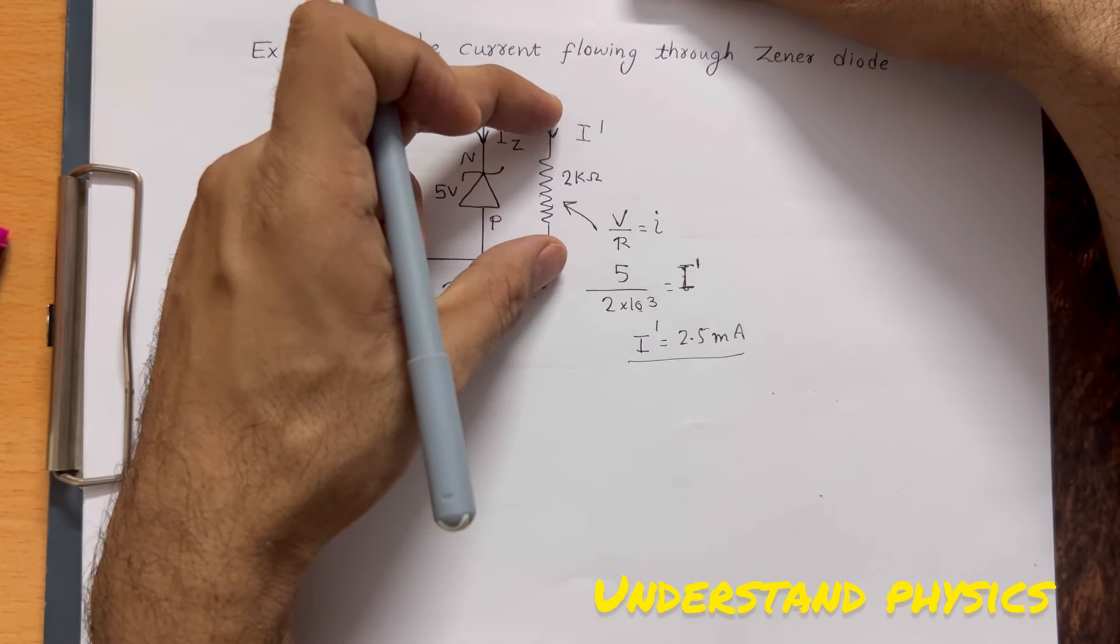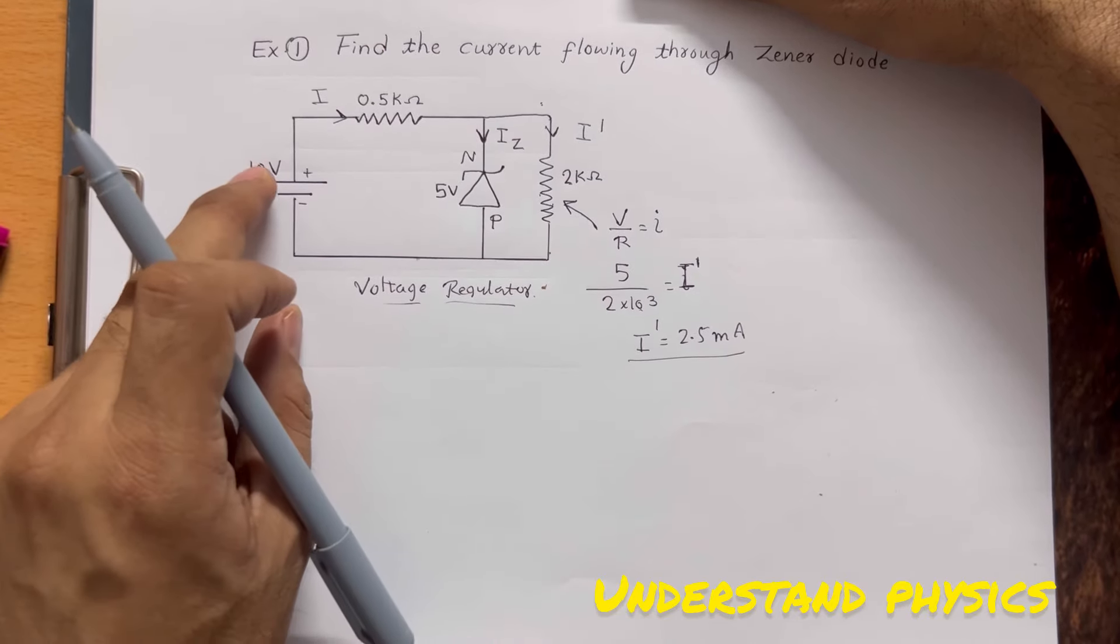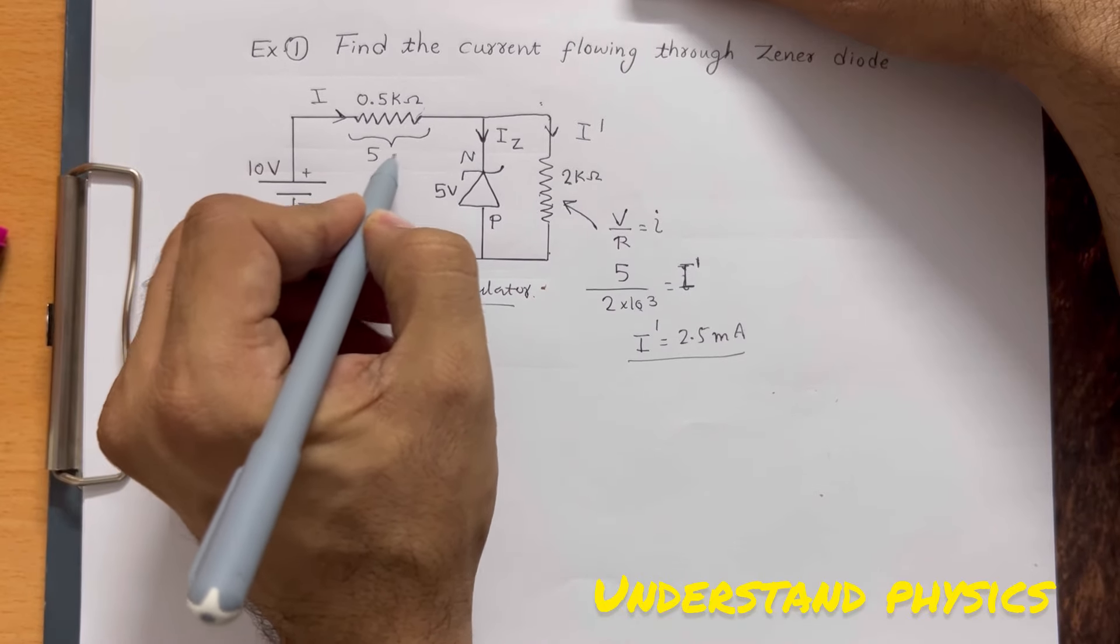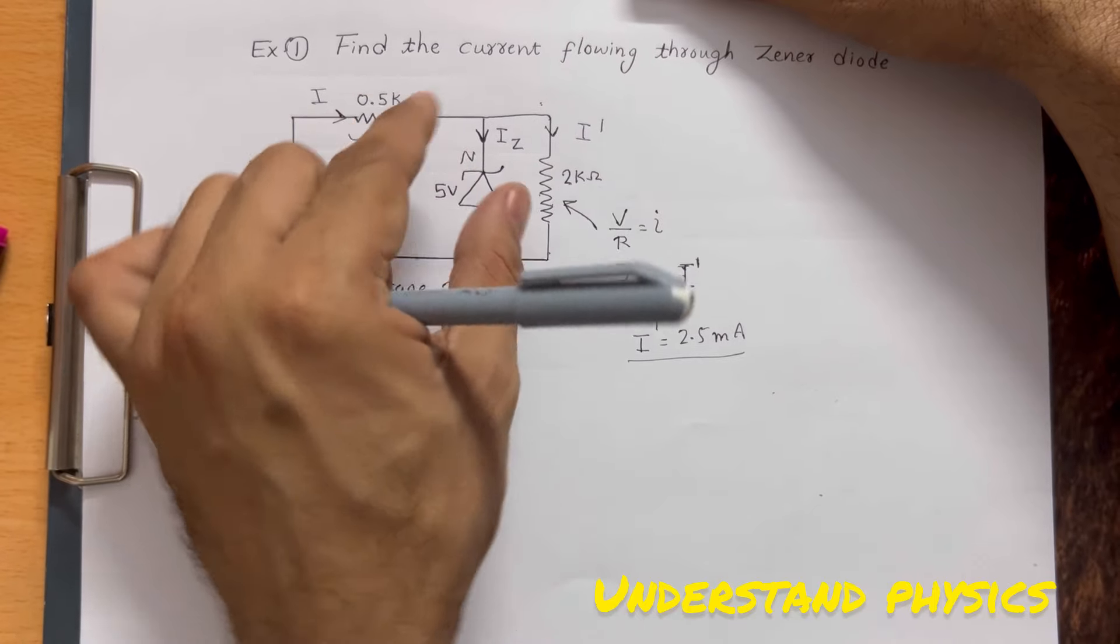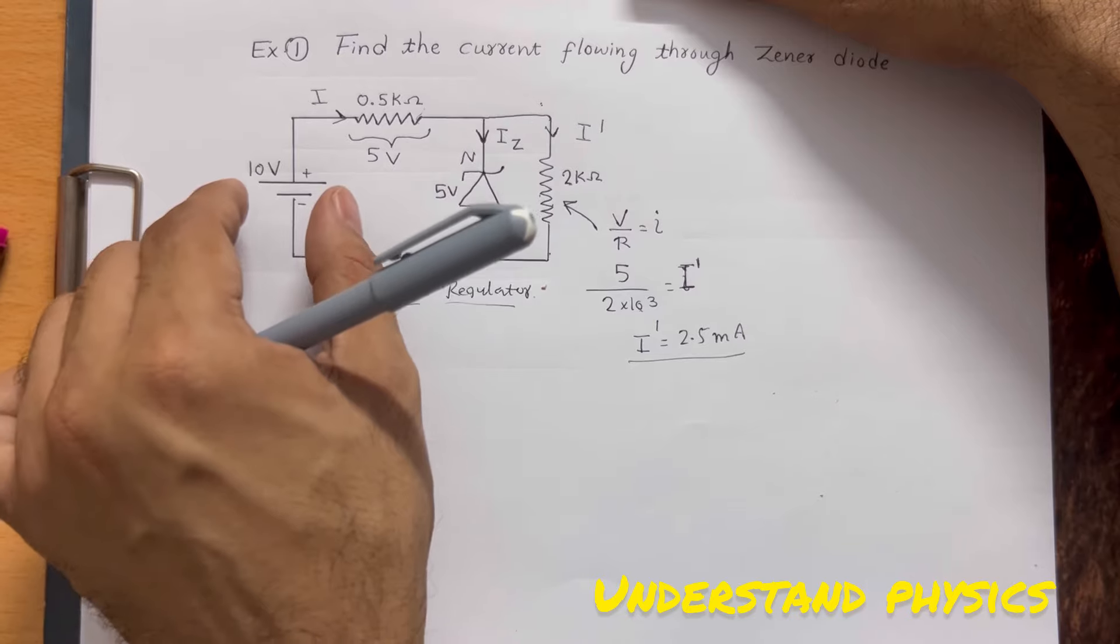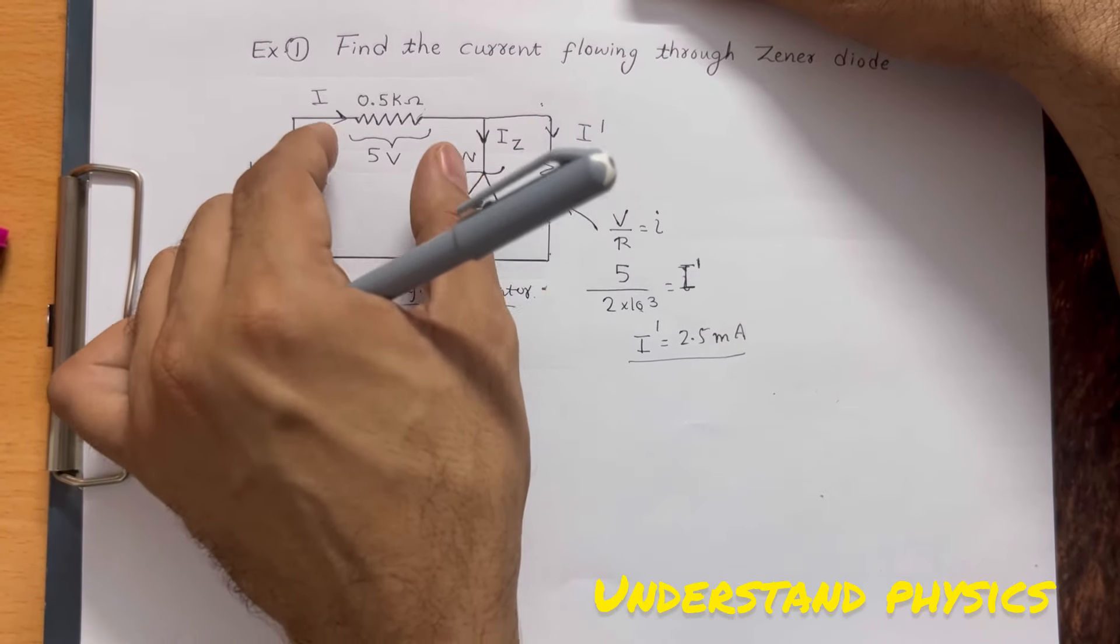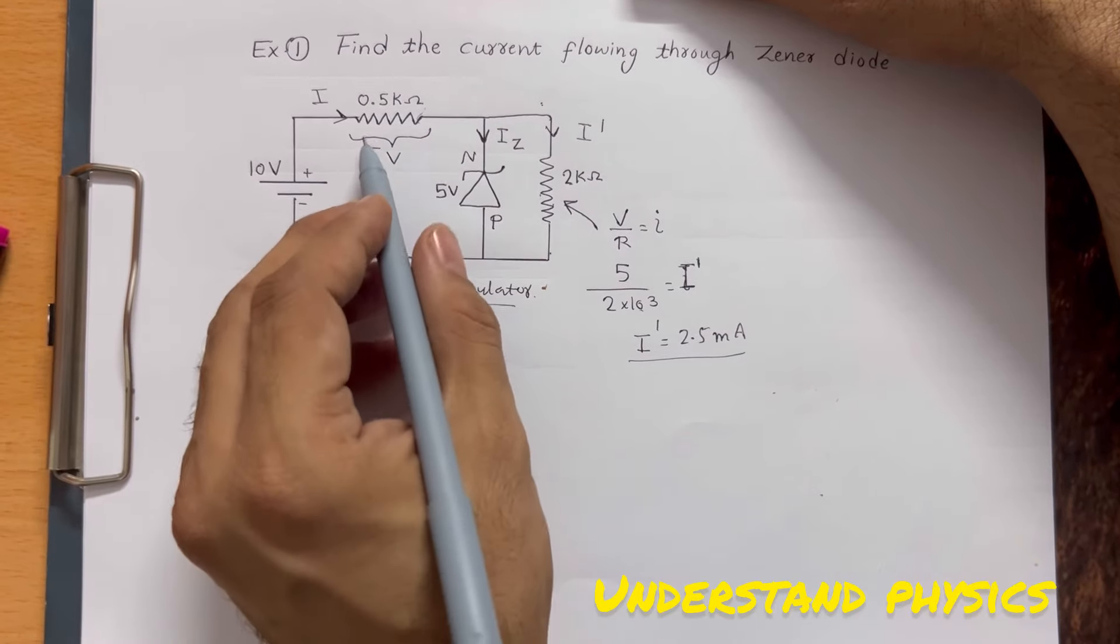Total voltage across this is 5 volts. The supply voltage is 10 volts, so you can understand that the voltage across this will also be 5 volts. Because this voltage plus this voltage, the sum of all voltages in the circuit should equal the EMF of the cell. Here 5 volts drop is there, so here also 5 volts will be there. 5 plus 5 equals 10.